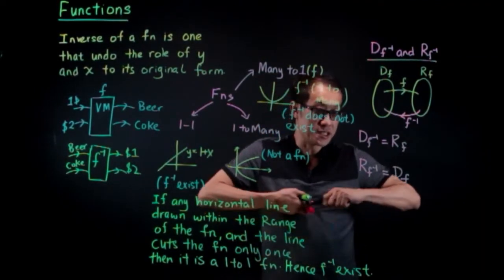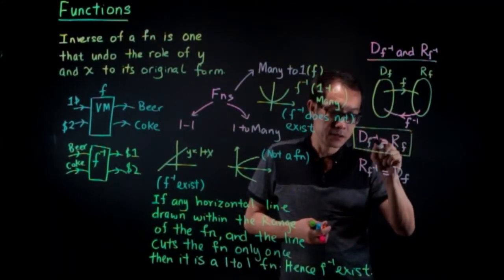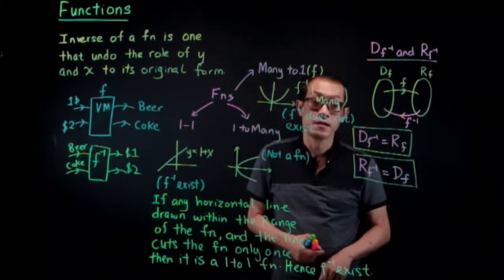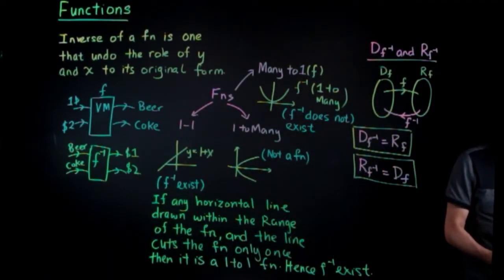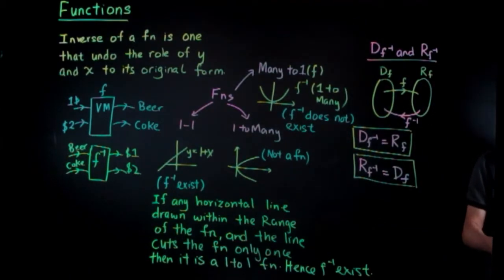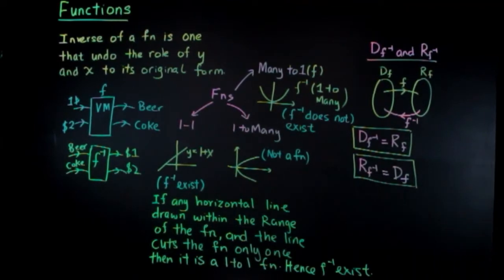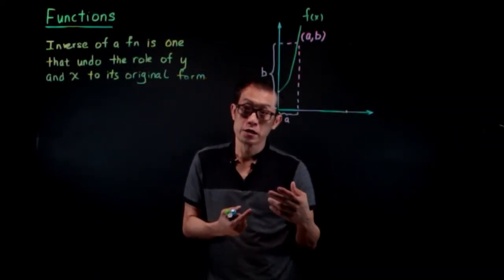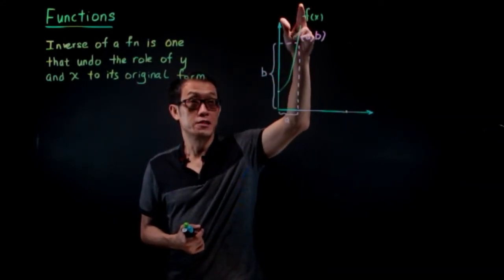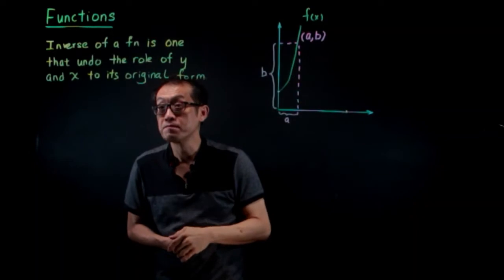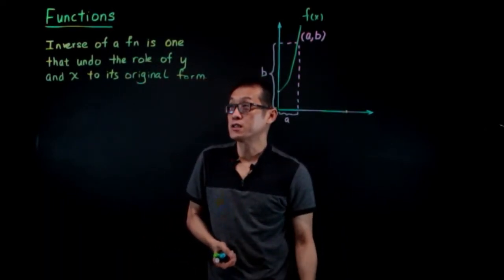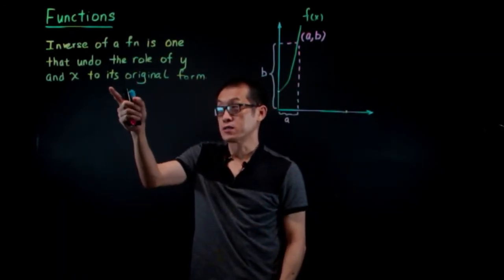Let me box this up — it's rather important. Next, we're going to learn how to sketch the graph of F inverse, given the original function F of x. The inverse of a function is one that undoes the role of Y and X to its original form.